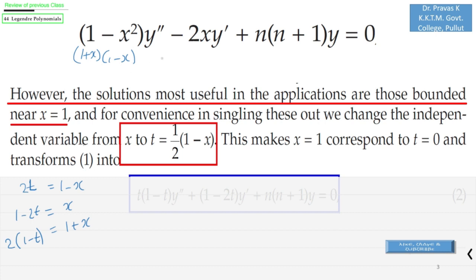And how to replace y''? We can see that dy/dx = (dy/dt)(dt/dx). So dt/dx from here you can see is -1/2, so this is what your dy/dx is. And d²y/dx² = d/dx(dy/dx) = d/dt(dy/dx)(dt/dx), which is -1/2.